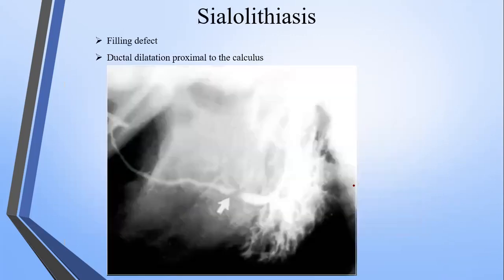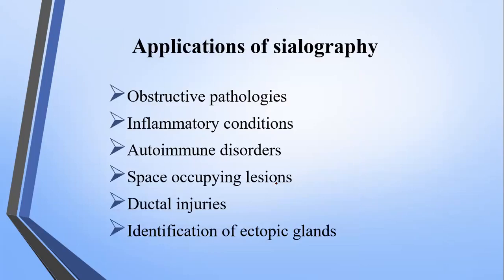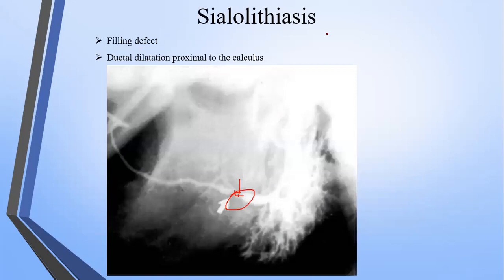If a stone is present in the duct and you have passed contrast medium, you will notice a radiolucency or defect — called a filling defect — at the site of the calculus, and the duct will be dilated proximal to the calculus. So with sialography you can also detect sialoliths.